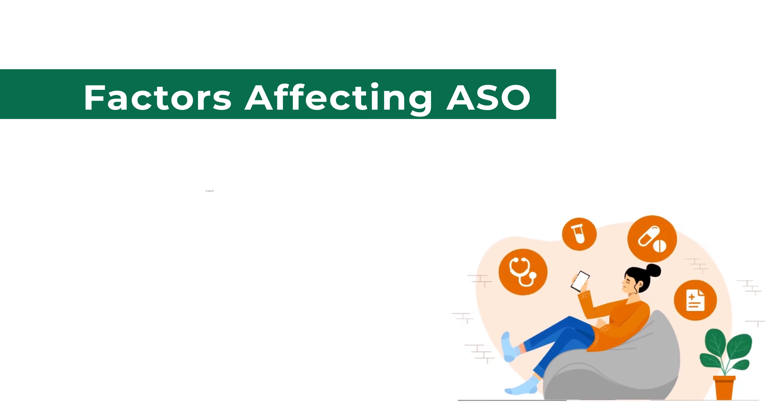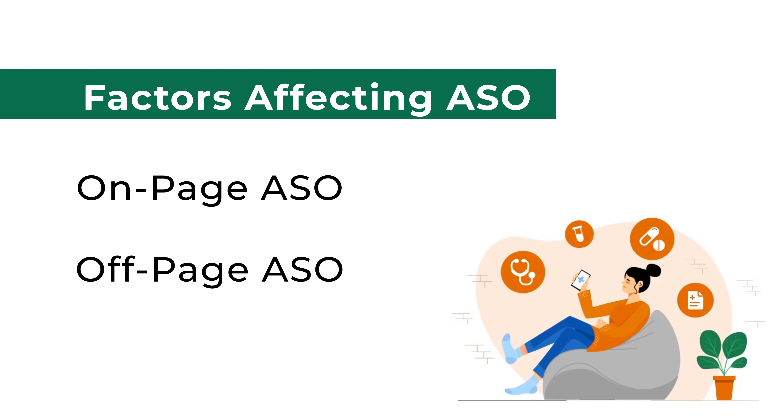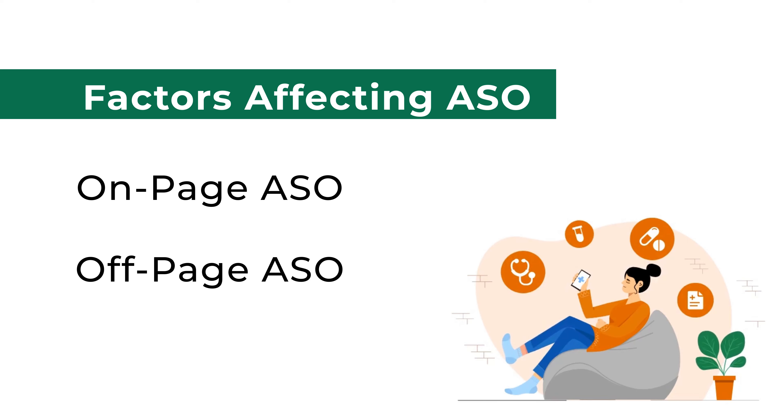Some of these factors might be a surprise for all of you. Within ASO, there are going to be two types of factors similar to SEO. One factor is on-page ASO and the second factor is off-page ASO.